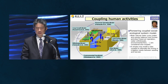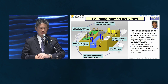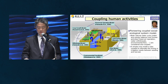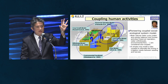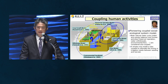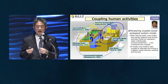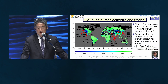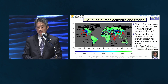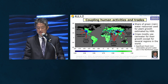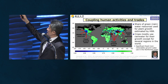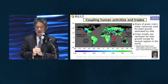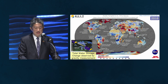My colleague Naoto Hanasaki, now at the National Institute for Environmental Studies, developed a numerical simulation model incorporating natural water cycle and human activities — including reservoir operation, groundwater pumping, and irrigation withdrawal to cropland. One application of this study shows that in western India, a large amount of groundwater is being used — that is a modeling result.